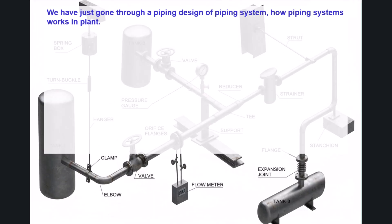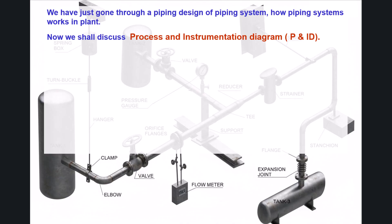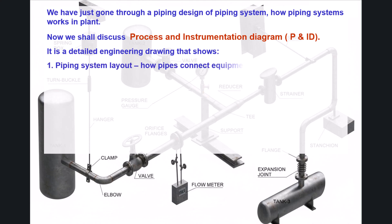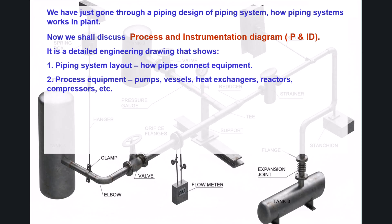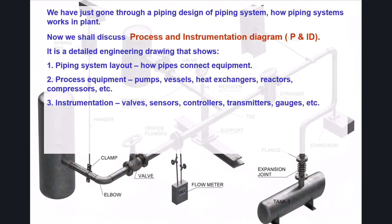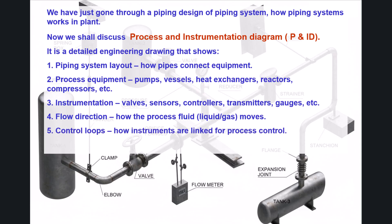Now we shall discuss the Process and Instrumentation Diagram (P&ID). It is a detailed engineering drawing that shows the piping system layout — how pipes connect equipment such as pumps, vessels, heat exchangers, reactors, and compressors. It also shows instrumentation like valves, sensors, controllers, transmitters, and gauges, as well as flow direction showing how process fluid or gas moves, and control loops showing how instruments are linked for process control.